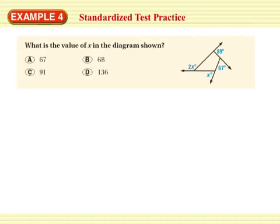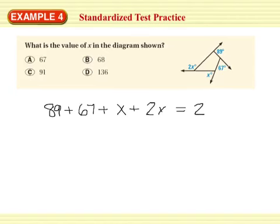What is the value of X in the diagram shown? Let's see. I've got 1, 2, 3 quadrilateral. I've got 4 exterior angles. If I add up those 4 exterior angles, it's always going to equal 360 degrees. No matter how many angles, no matter how many vertices, they always add up to 360 degrees.